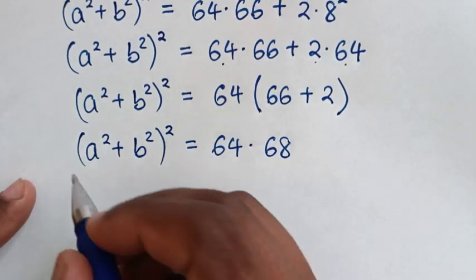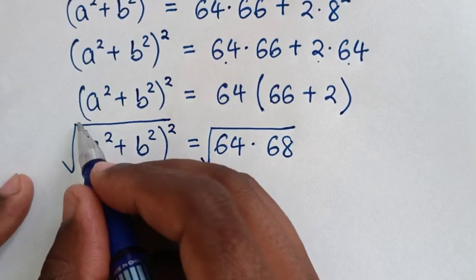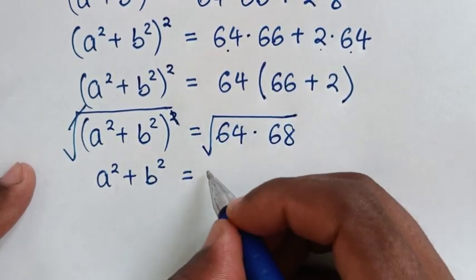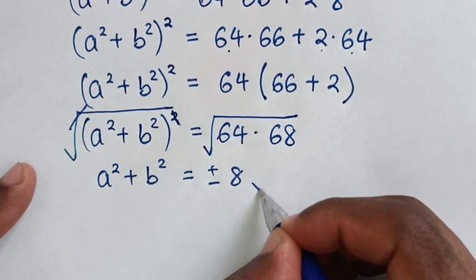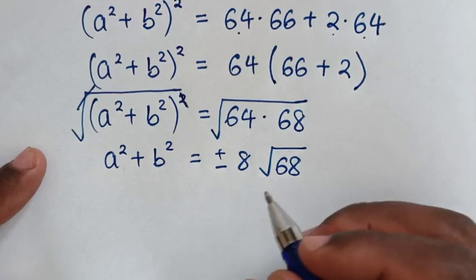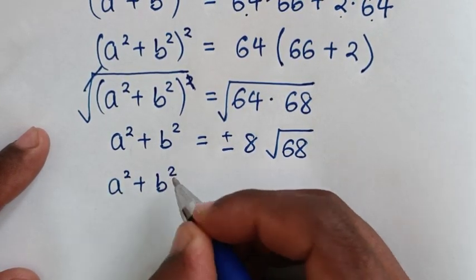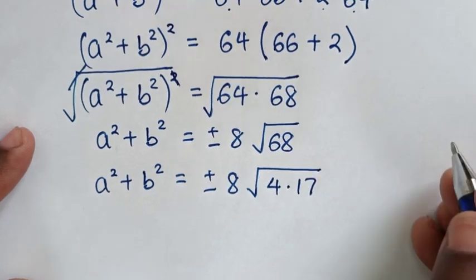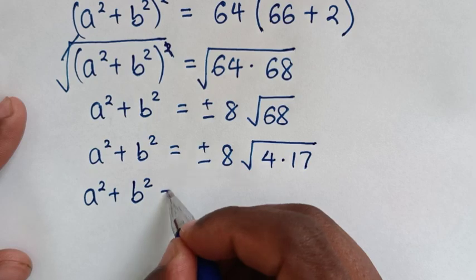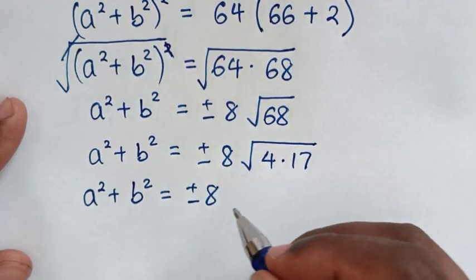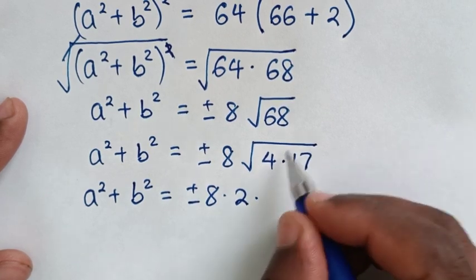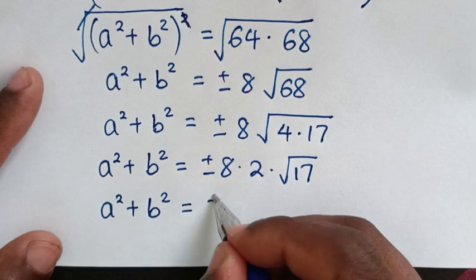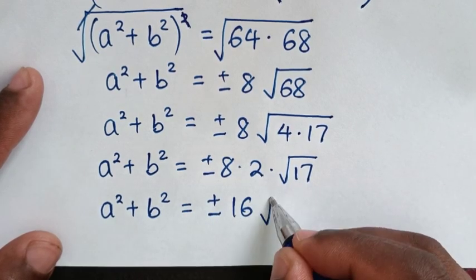To remove the square, we apply the square root to both sides. The square root cancels the square, giving a squared plus b squared equals plus or minus square root of 64 times 68. The square root of 64 is 8, and 68 equals 4 times 17, so square root of 68 is 2 root 17. Therefore a squared plus b squared equals plus or minus 8 times 2 times root 17, which is plus or minus 16 root 17.